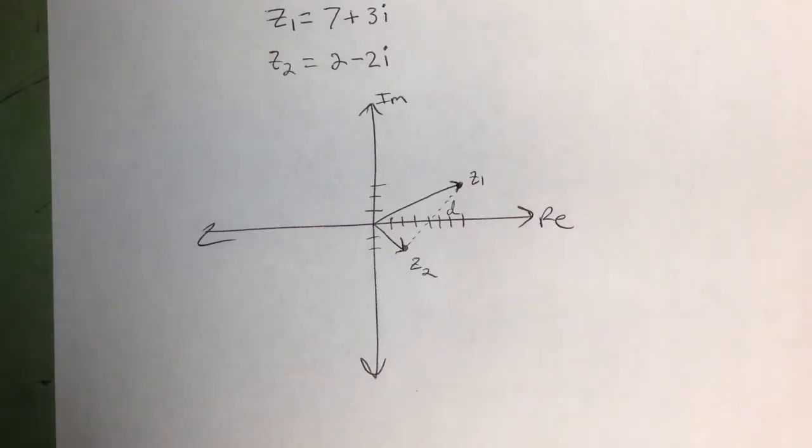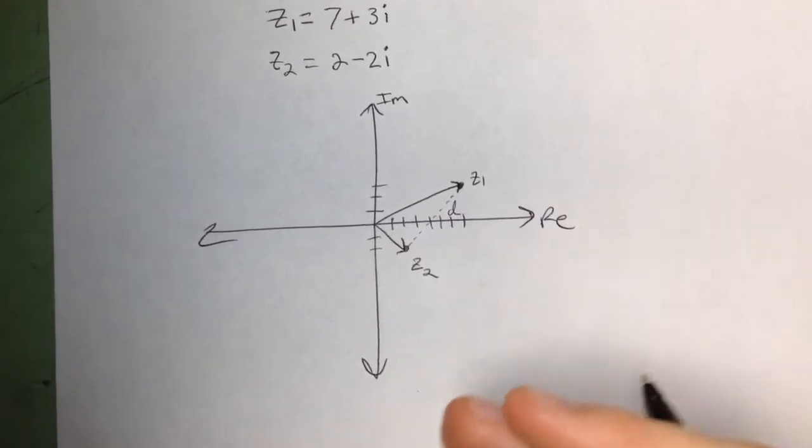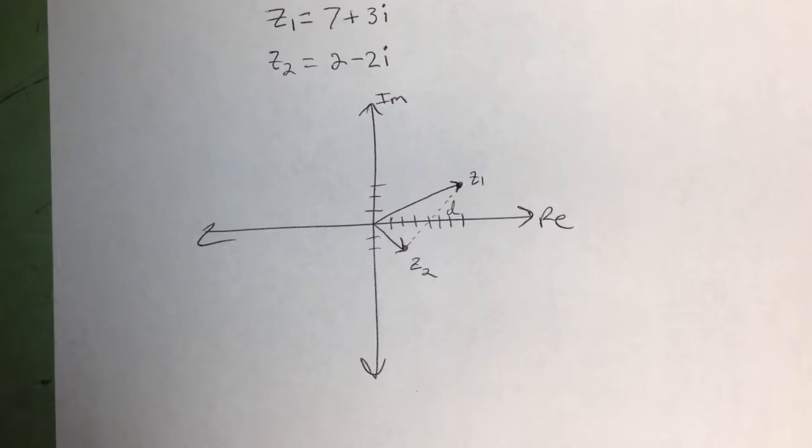So what you want to do is describe each of the complex numbers as a vector, find the vector that describes their position relative to each other, and then take the magnitude of that.